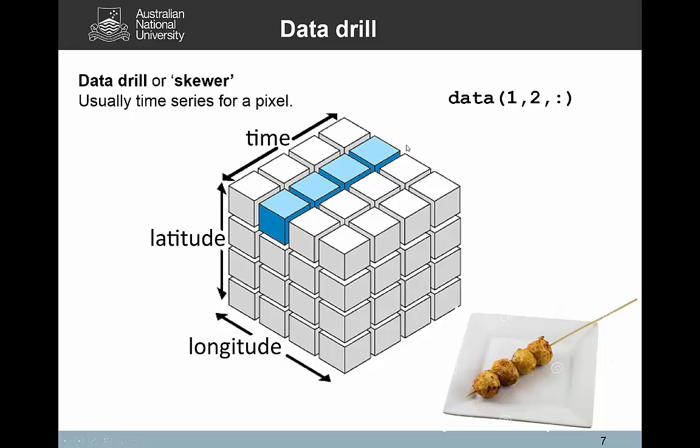That will give me an array back, a row of four numbers or a column of four numbers. You can call that data drill or skewer, because it's a bit like putting a skewer through the data cube and then dropping everything else that's not on the skewer, sort of thing.